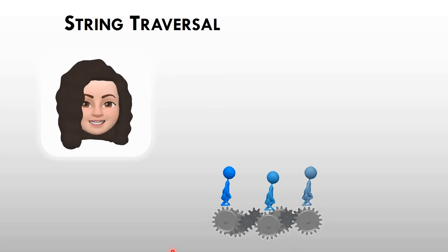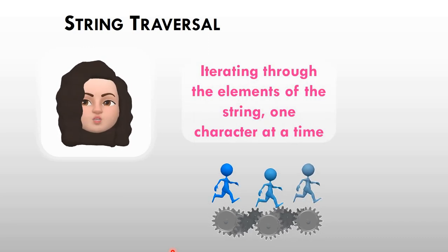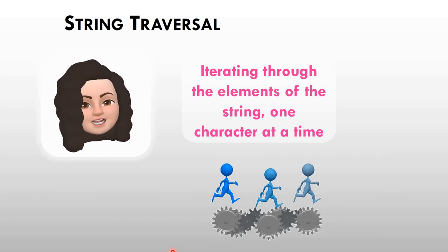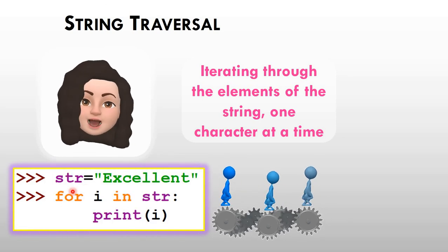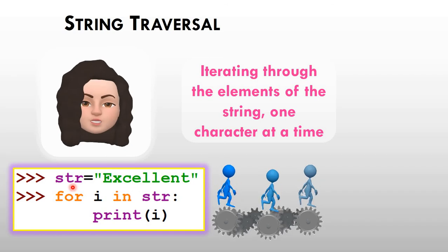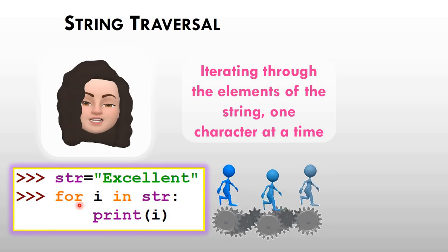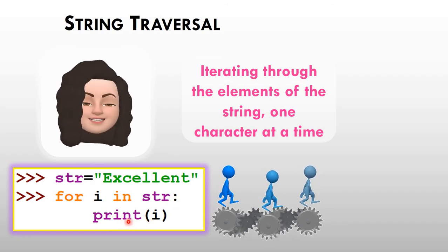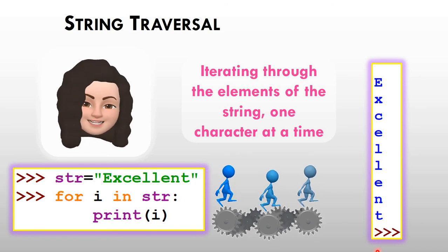String traversal means processing and accessing every element of the string one by one — iterating through the elements one character at a time. To access all elements of the string one by one, we use a for loop. For example, str is equal to 'excellence'. Using 'for i in str: print(i)' will print each character: E, X, C, E, L, L, E, N, T. So traversal is iterating through the elements of the string character by character.